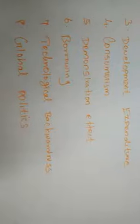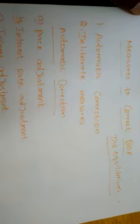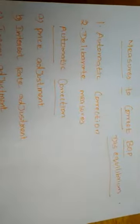Because of this, the balance of payment disequilibrium will be created. So these are the ten causes of balance of payment disequilibrium. Next, we will study the measures to correct balance of payment disequilibrium, since it affects the economy harmfully. These measures are broadly classified into two types: first, automatic corrections, and second, deliberate measures.